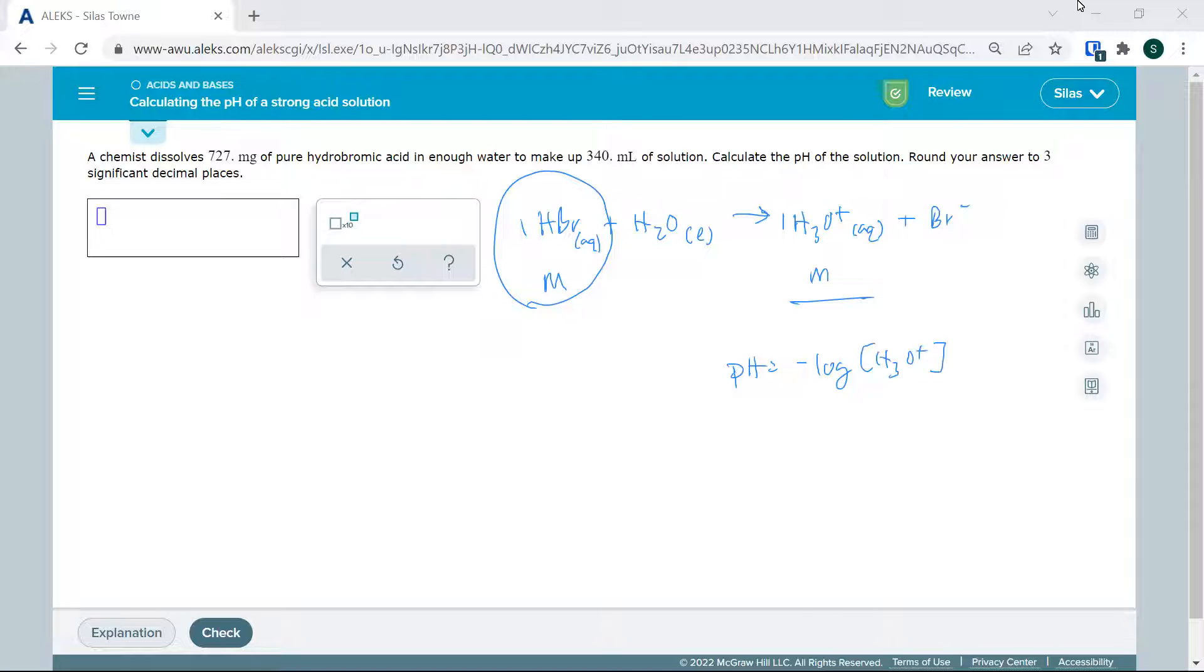So what are we told? We have 727 milligrams. I'm going to convert that to grams. So that's 0.727 grams HBr in 340 milliliters. But what is molarity? It's moles per liter. So I'm going to convert, and I'll look it up, 80.91 grams per one mole of HBr.